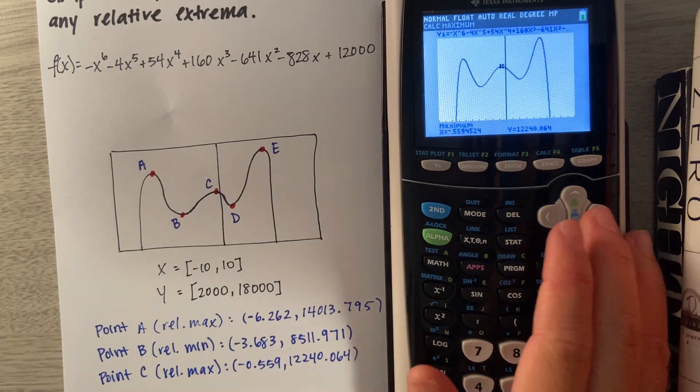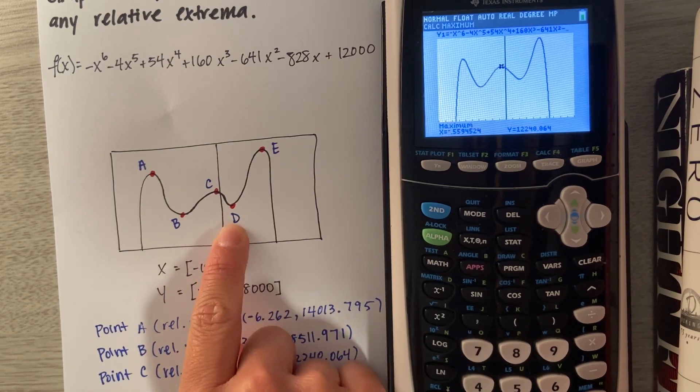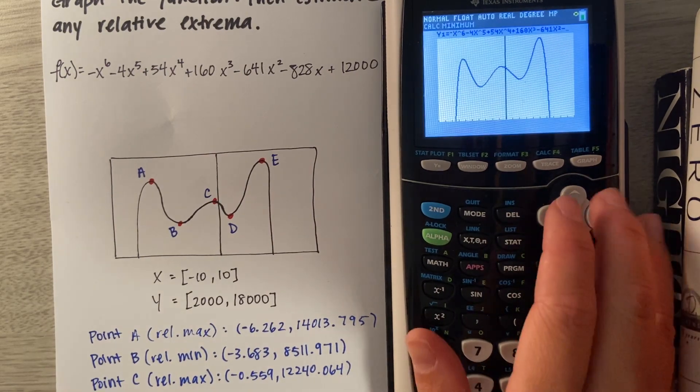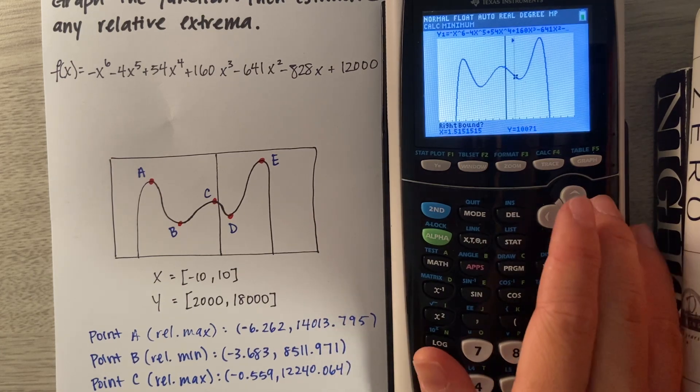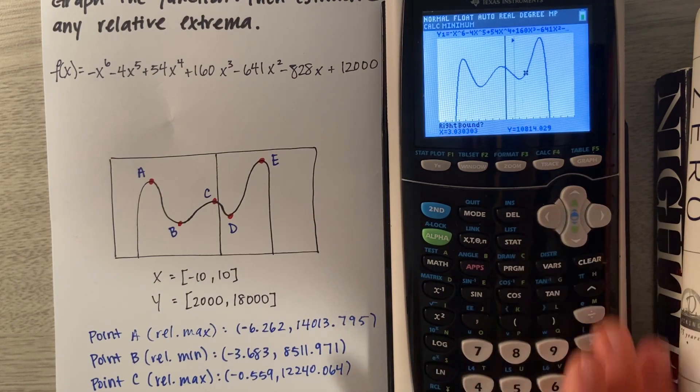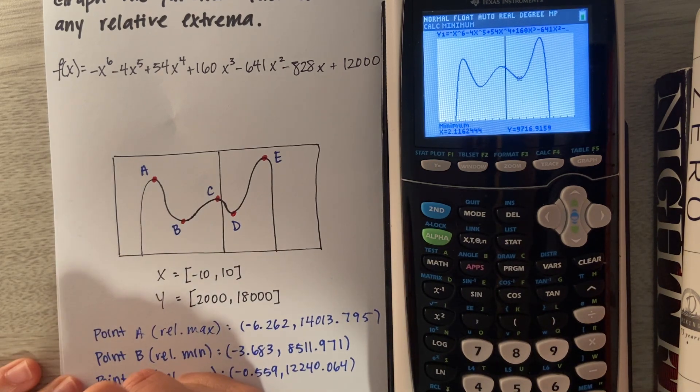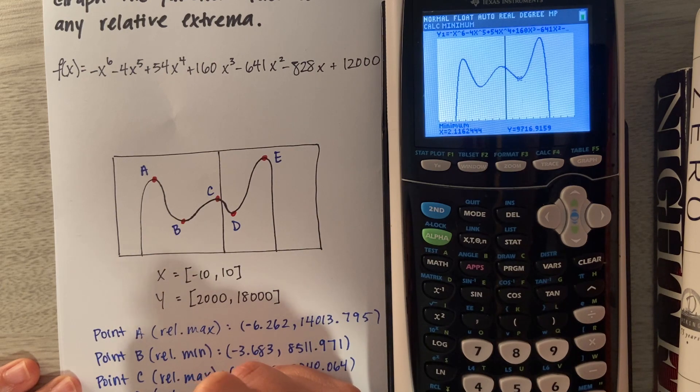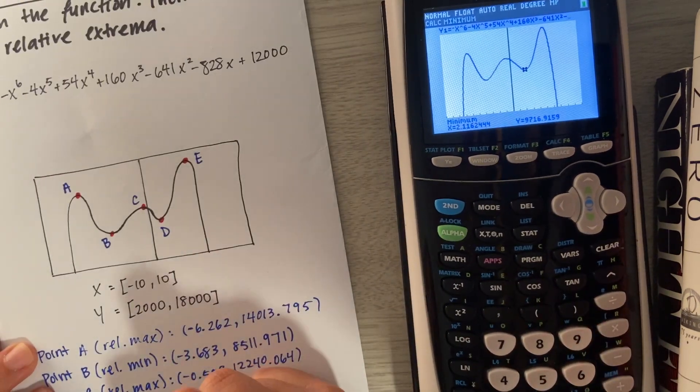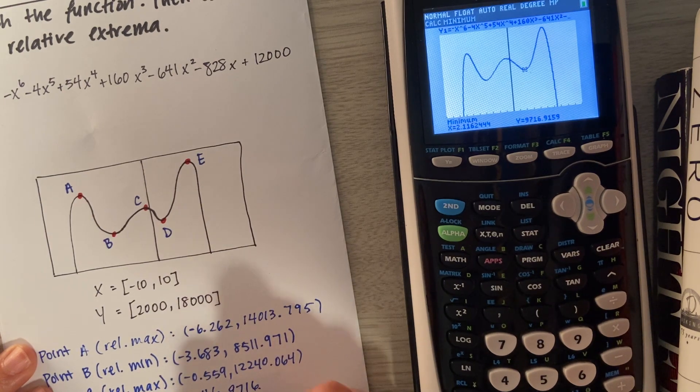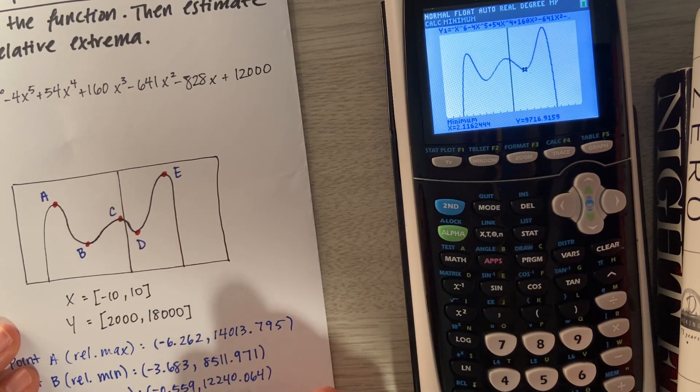We're almost done. Now we have point D, and point D is a relative min. Here we go again. Second, Calc, Min. Left bound, right bound, best guess. Point D is a relative min. Our X coordinate is 2.116, 9,716.916. Perfect.